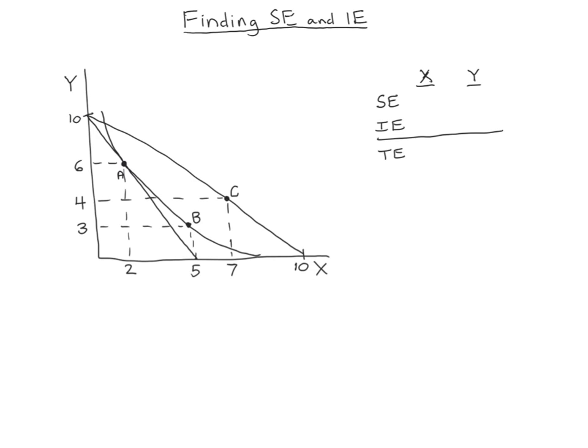So as a starting point, we have a nice diagram here. It looks a lot like the one in the previous video. We have good x here and good y. We can see that on our initial budget constraint, we could afford either five units of x or ten units of y or some combination. We see that the optimal point here labeled a is where we buy two units of good x and six units of good y.